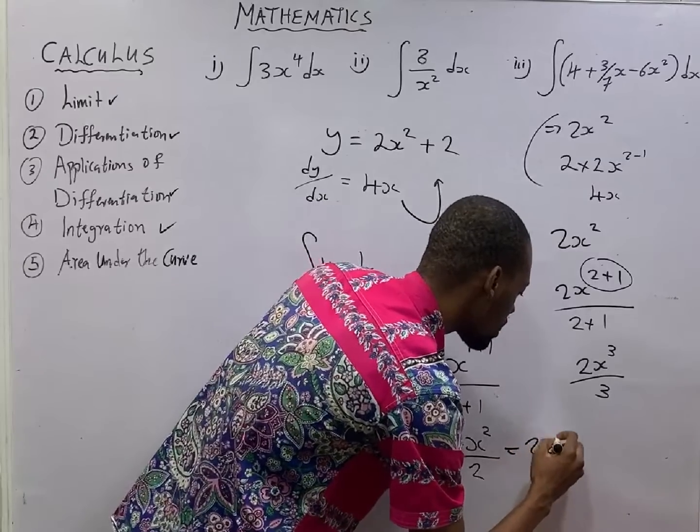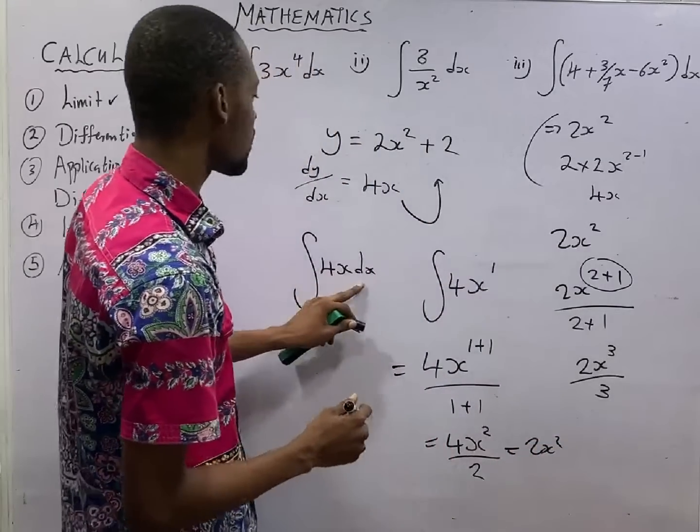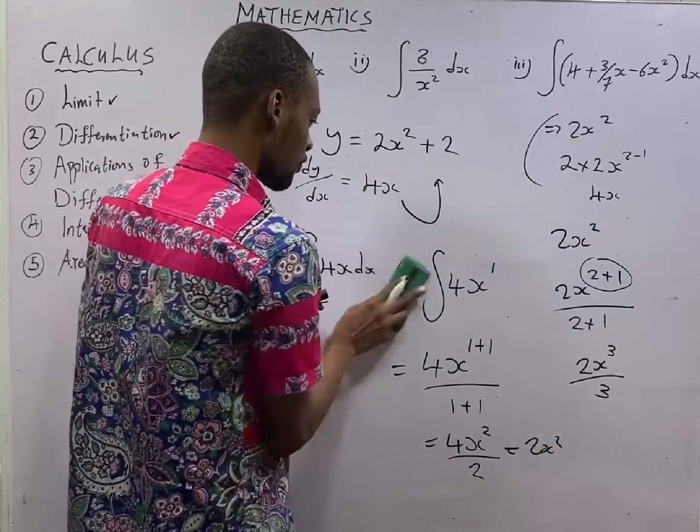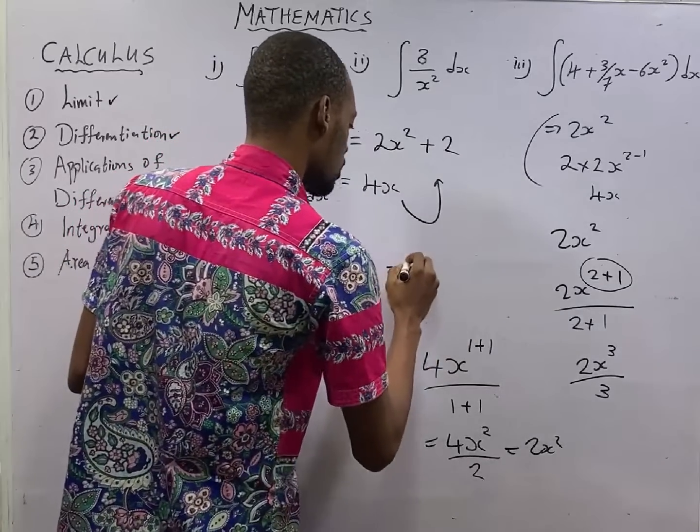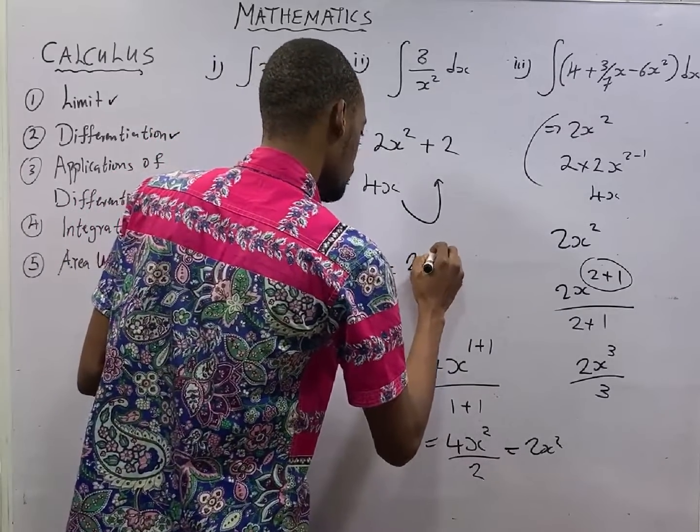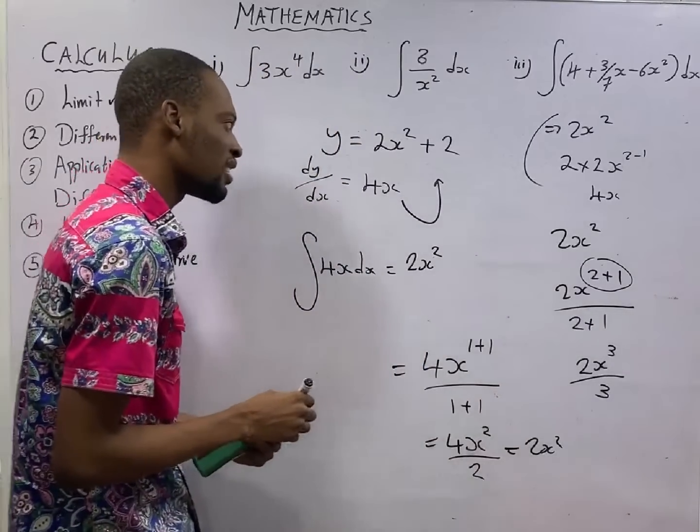4 divided by 2 is 2. So, this will give you 2x squared. So, integration of this guy, we got 2x squared.